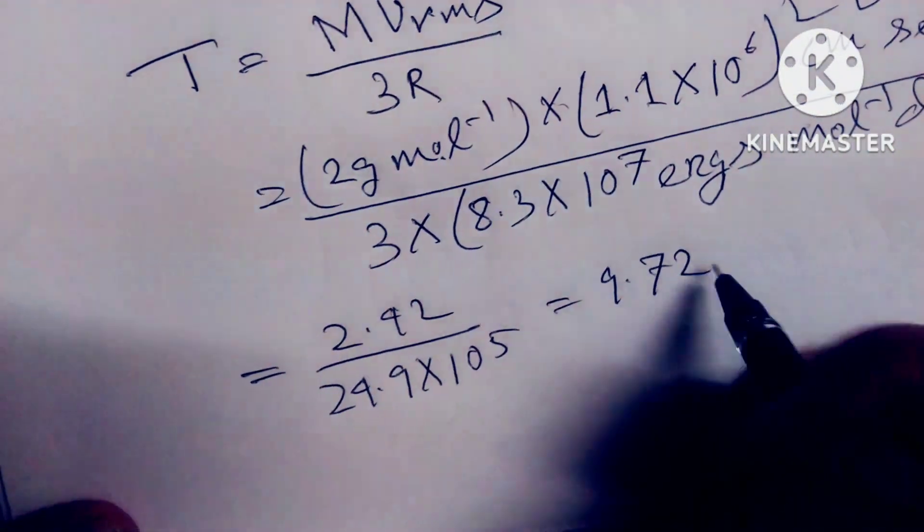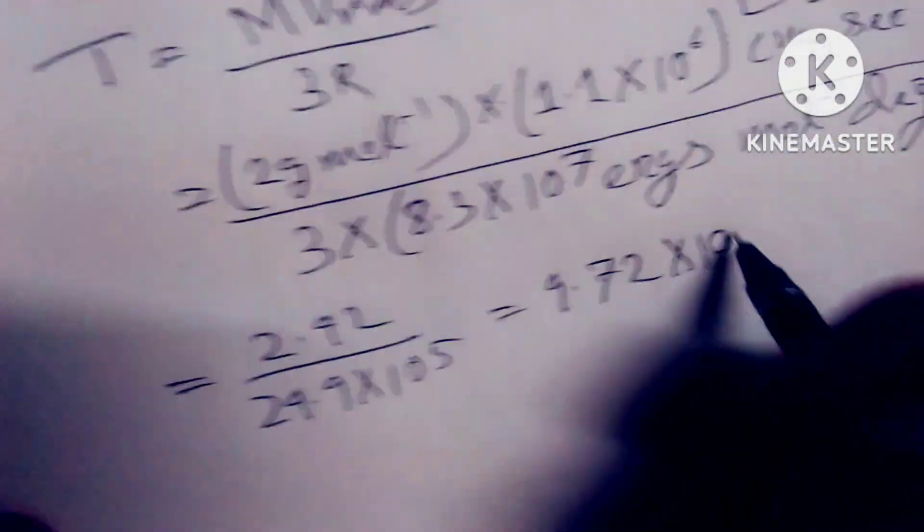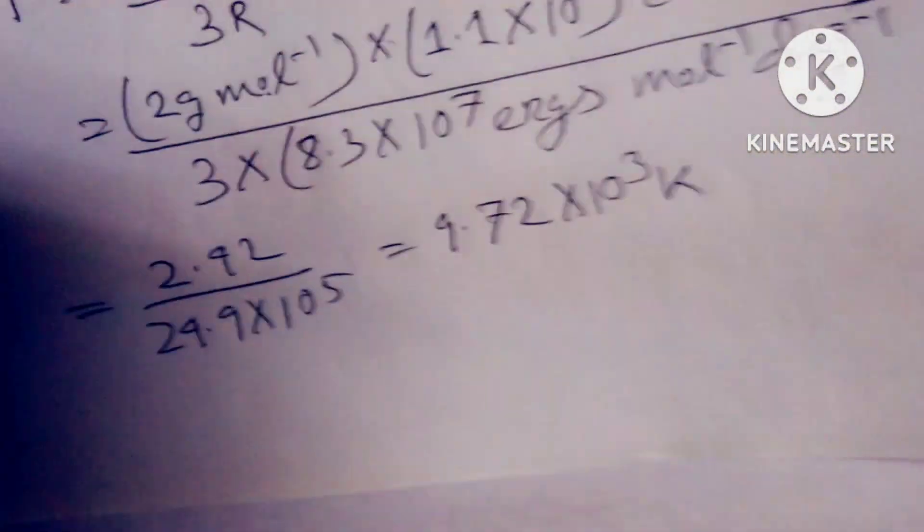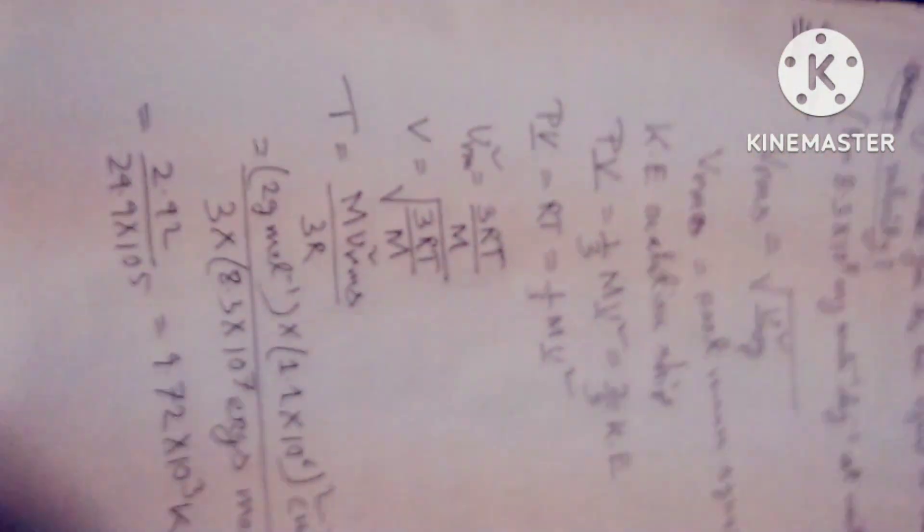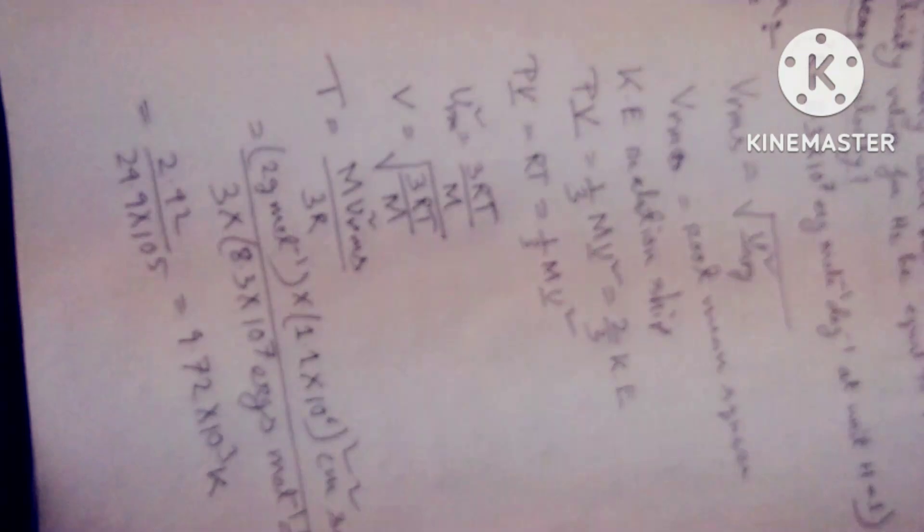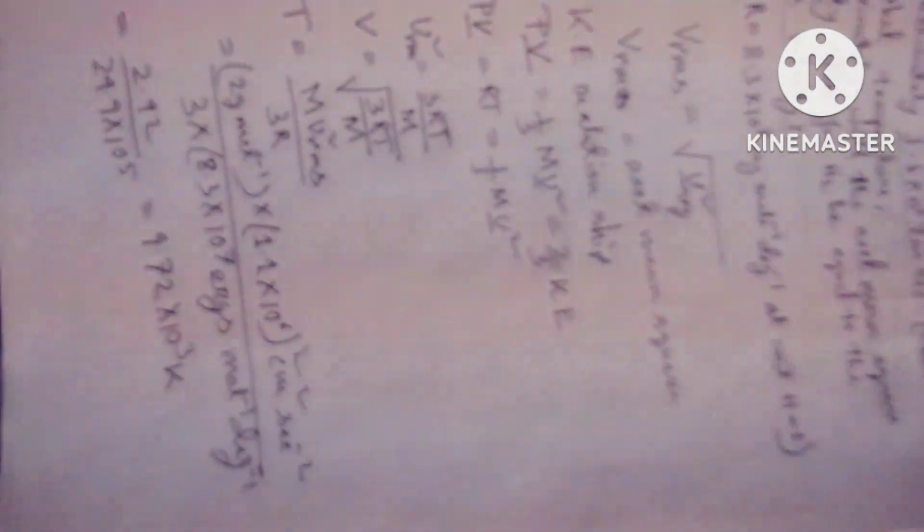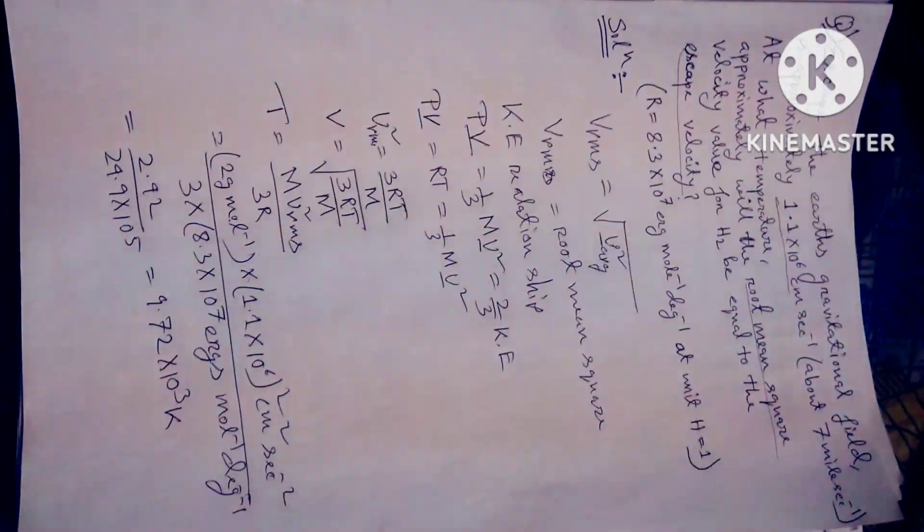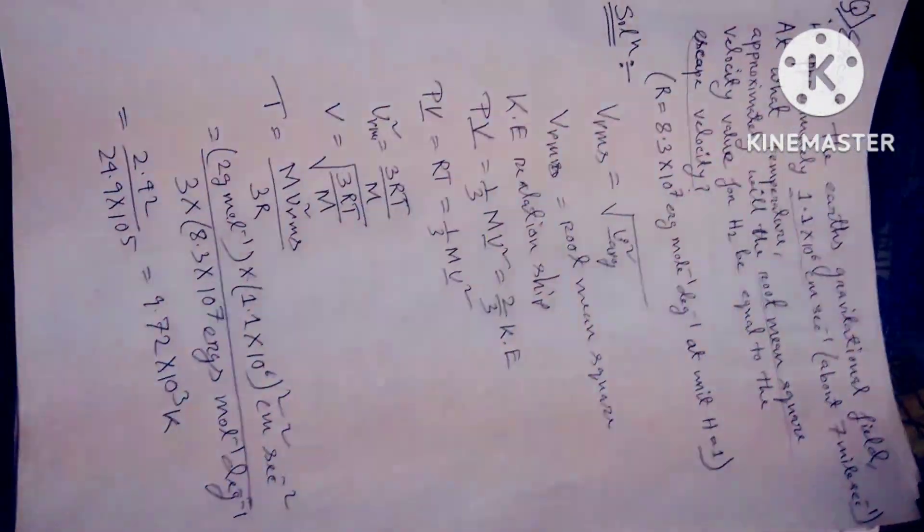It is 9.72×10³ Kelvin. I hope I can clear this concept, friends. Kelvin is the unit of temperature. If there's any kind of mistake, please comment. Thanks for watching.